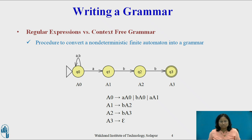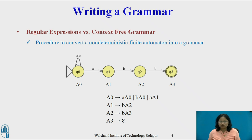Hence, introduce the production A0 → aA0 | bA0 | aA1. State Q1 has a transition to state Q2 on symbol b, so introduce the production A1 → bA2. State Q2 has a transition to state Q3 on symbol b, so introduce the production A2 → bA3. State Q3 is an accepting state, so introduce A3 → epsilon.